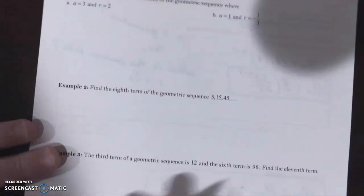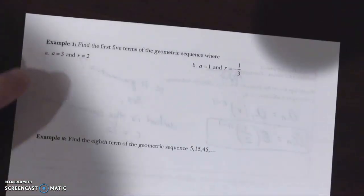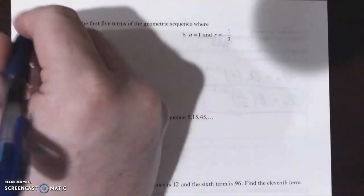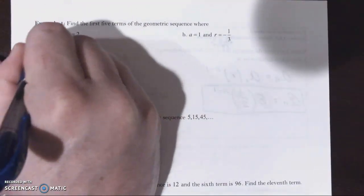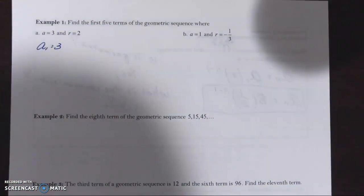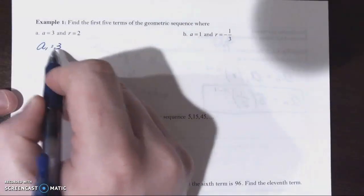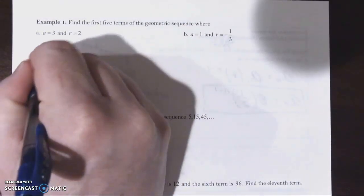Let's move along. Find the first five terms of the geometric sequence where a is three and r is two. So our first term is three. Our common ratio is two. I don't really think we need to create a big formula for this, to be completely honest with you. If our ratio is two, we're just going to continually multiply by two.